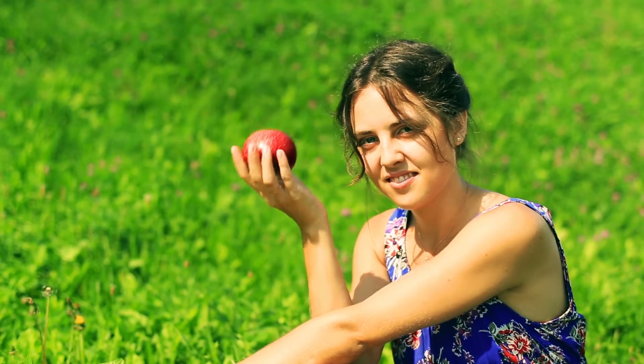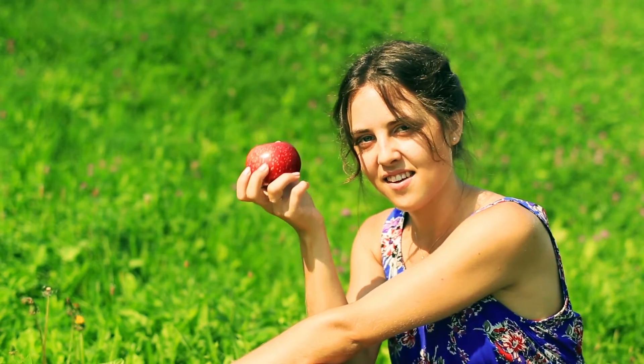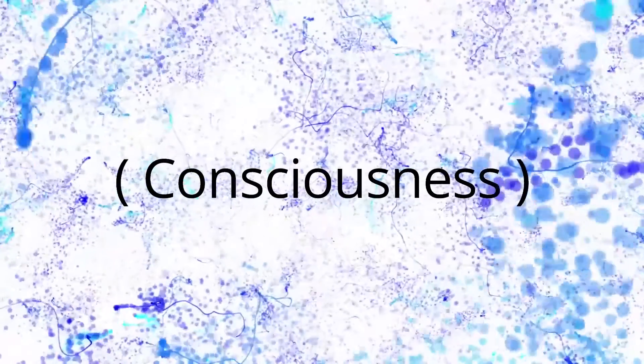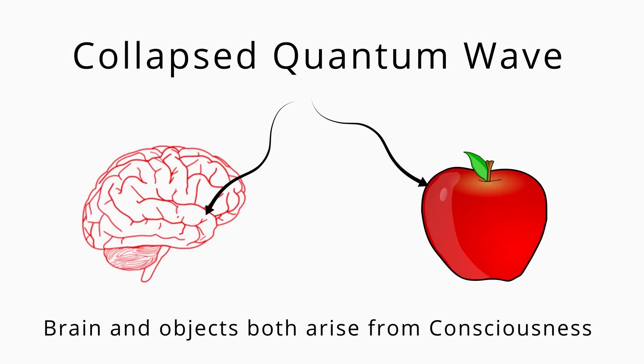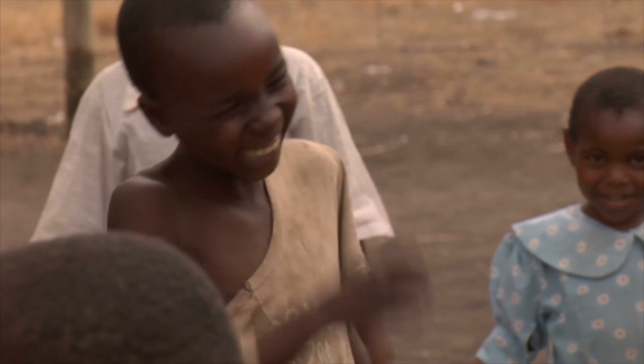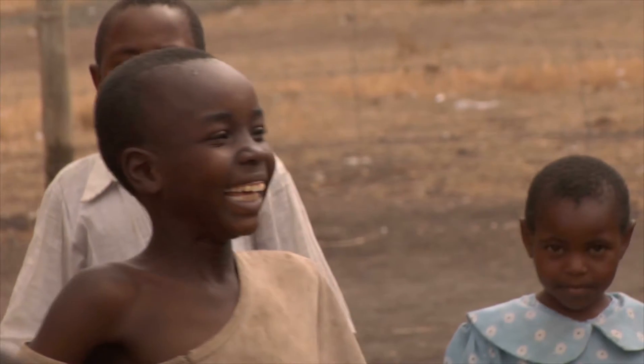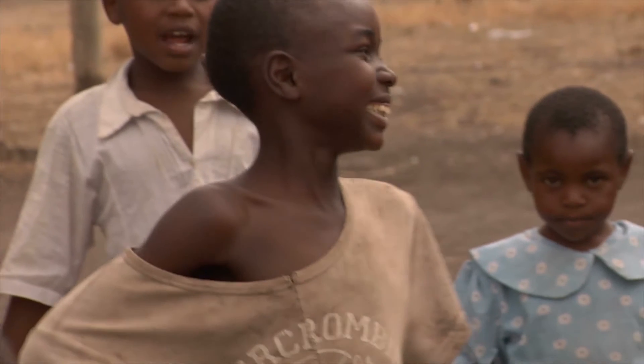The subject sees the object as separate from it. This is called self-reference. But it is only appearance. The truth is that consciousness creates both subject and object. Both the brain and the object are collapsed in the same event, but we never experience the brain as an object. Instead, consciousness identifies with the brain that is then experienced as the subject of the experience.